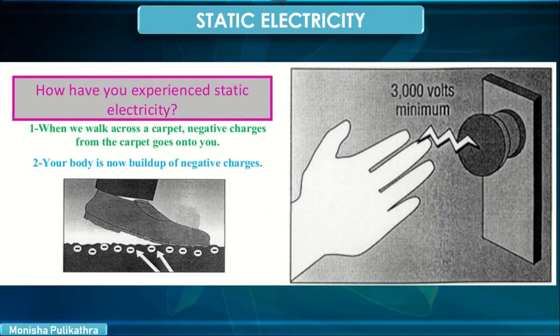Coming to static electricity — wonder why you get zapped when touching a door knob, especially during winter? People will tell you it's a simple case of static electricity. But what is static electricity? In some texts, static electricity is a term used for electricity that doesn't deal with moving charges, but actually there is a movement of charges occurring. When you get zapped, charges are actually moving between your fingers and the door knob, though the movement is only brief compared to the current in a closed circuit.